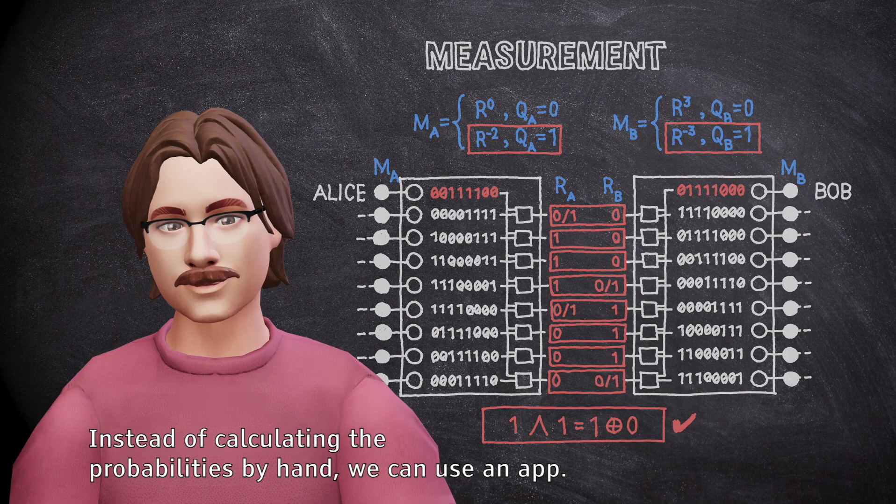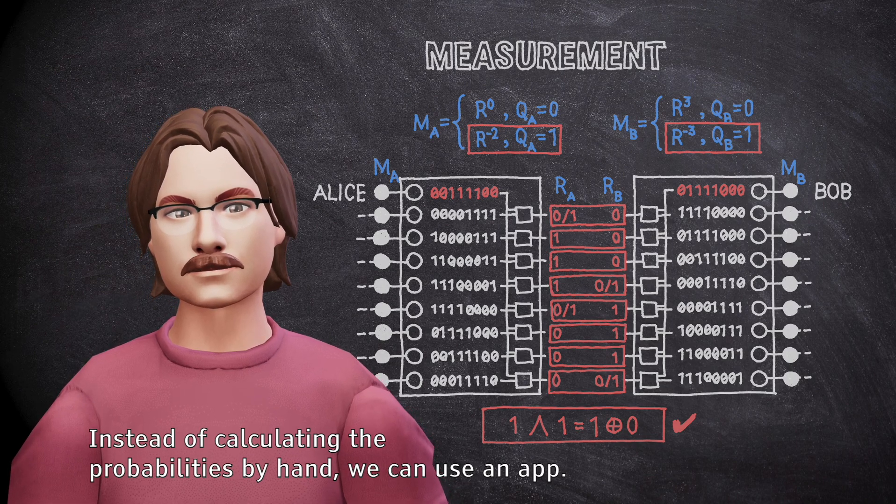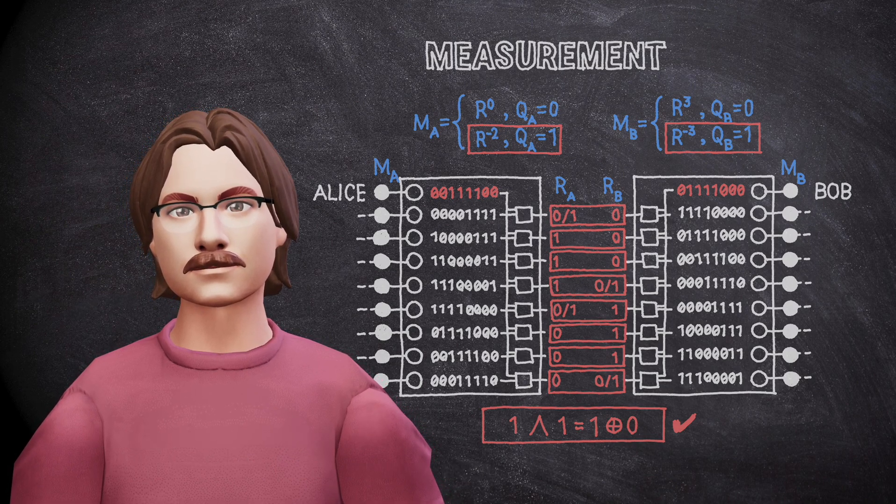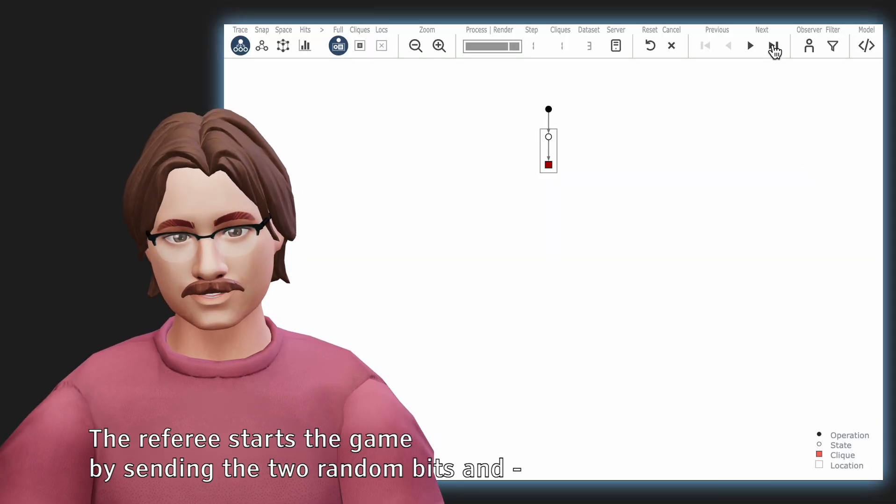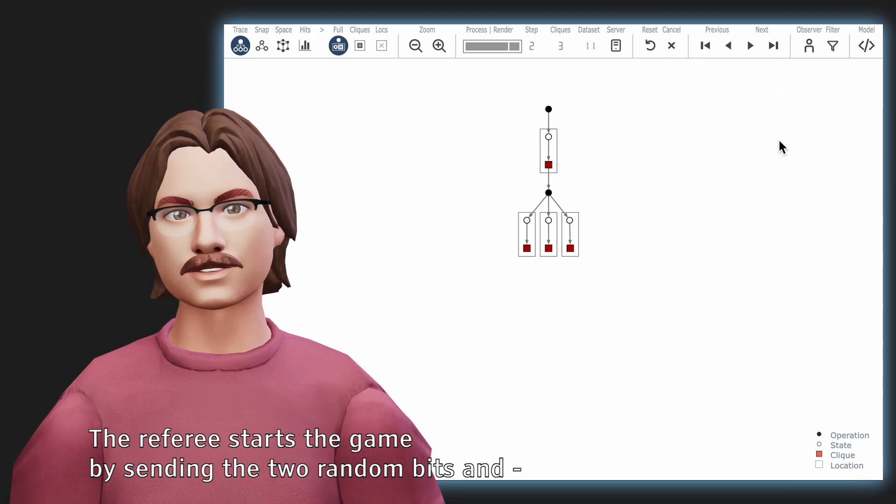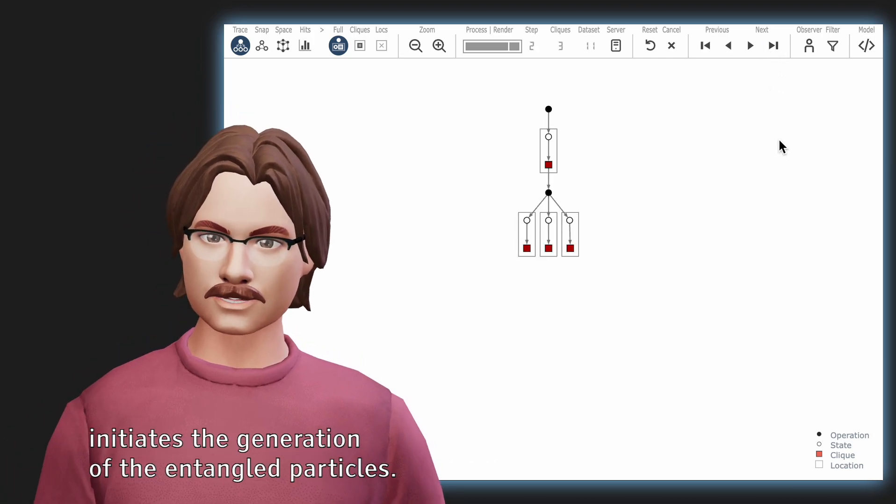Instead of calculating the probabilities by hand, we can use an app. Let's first run the simulation one step at the time. The referee starts the game by sending the two random bits and initiates the generation of the entangled particles.